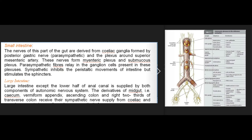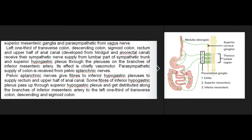Large intestine: except the lower half of the anal canal, it is supplied by both components of the autonomic nervous system. Derivatives of the midgut — caecum, vermiform appendix, ascending colon, and right two-thirds of the transverse colon — receive sympathetic supply from coeliac and superior mesenteric ganglia and parasympathetic from the vagus nerve. The left one-third of the transverse colon, descending colon, sigmoid colon, rectum and upper half of the anal canal, developed from the hindgut and anorectal canal, receive sympathetic supply from the lumbar sympathetic trunk and superior hypogastric plexus through the plexuses on branches of the inferior mesenteric artery — its effect is chiefly vasomotor.